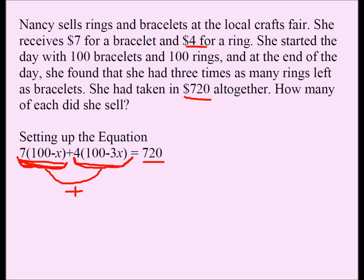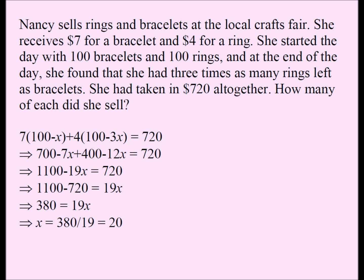You really want to make sure that you understand how this equation is constructed. Once you have it, we'll go ahead and solve the equation. I'm going to distribute 7 over (100 minus X), getting 700 minus 7X. I'm going to distribute 4 over (100 minus 3X), getting 400 minus 12X.